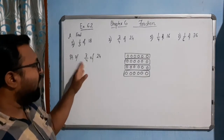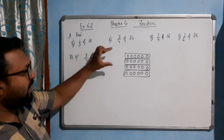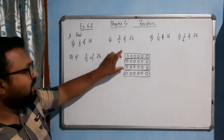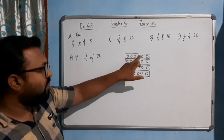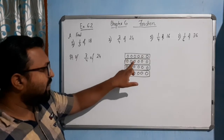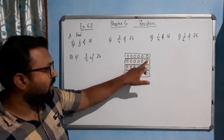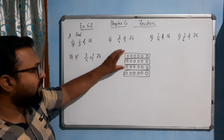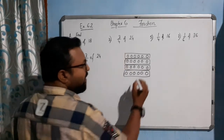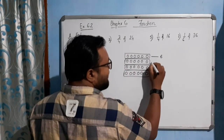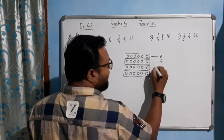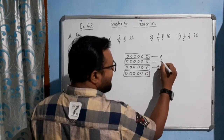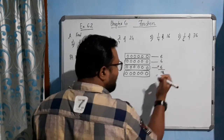So 3 out of 4 packets — if we take 3 packets out of 4 packets, how many sweets do we have? Counting: 1 through 18. 18 sweets we will get. From each packet we get 6, and 6 plus 6 plus 6 gives 18 sweets.